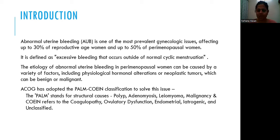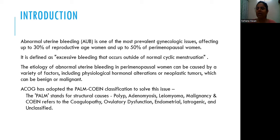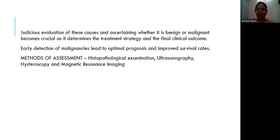PALM stands for structural causes and COEIN stands for various other causes. PALM is polyp, adenomyosis, leiomyoma, malignancy, and COEIN stands for coagulopathy, ovulatory dysfunction, endometrial, iatrogenic, and unclassified. It is very important to judiciously evaluate the causes and ascertain whether it is benign or malignant, because it is crucial to determine the treatment strategy and the final clinical outcome.